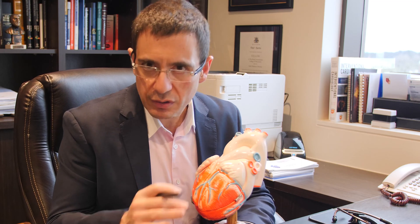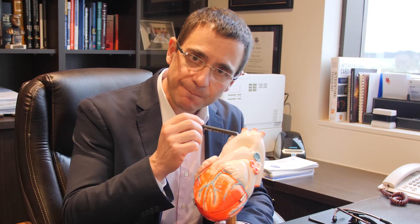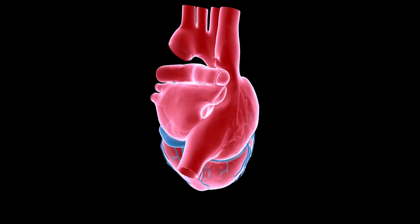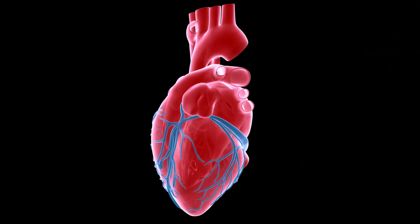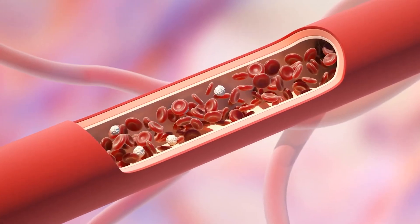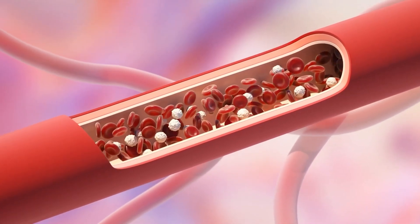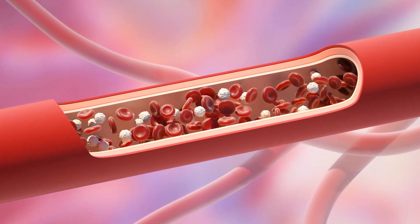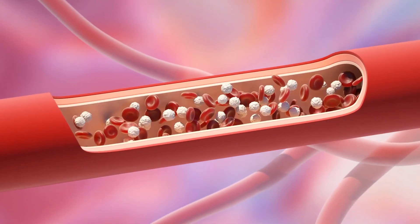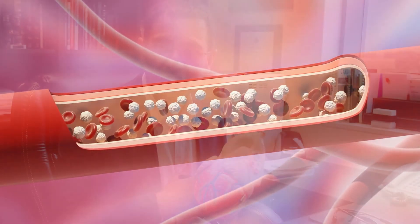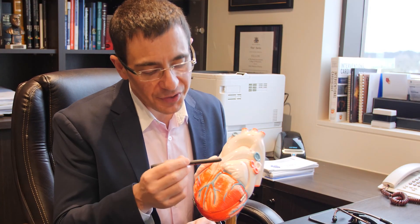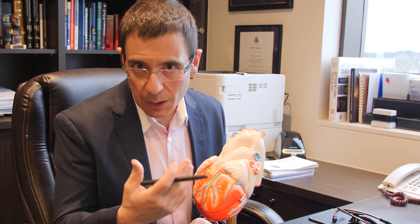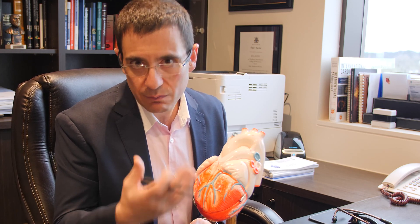I want to focus on the coronary arteries. These arteries come off the aorta and feed blood and nutrients to the heart muscle itself. All our muscles require nutrients and oxygen, and the heart is no different — it receives its oxygen and nutrients from the coronary arteries. As a cardiologist specialised in interventional cardiology, I'm particularly focused on how these arteries work and when problems can develop inside them — essentially that's when I get called in.